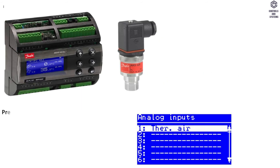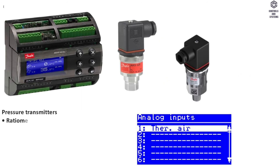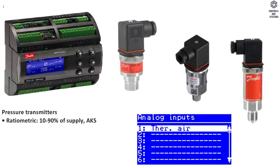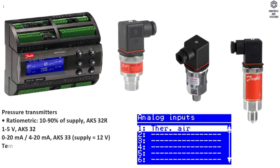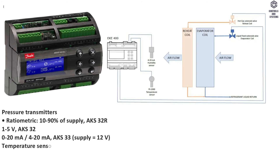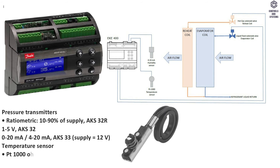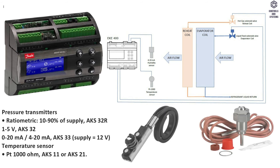Analog inputs — pressure measuring: ratiometric pressure transmitter 10 to 90% of supply, type AKS32R; 1 to 5V pressure transmitter, type AKS32R; 0 to 20 or 4 to 20mA pressure transmitter, type AKS33R. Temperature measurement: PT1000 ohm (AKS11 or AKS21); NTC 86kΩ at 25°C; and input from digital scroll.